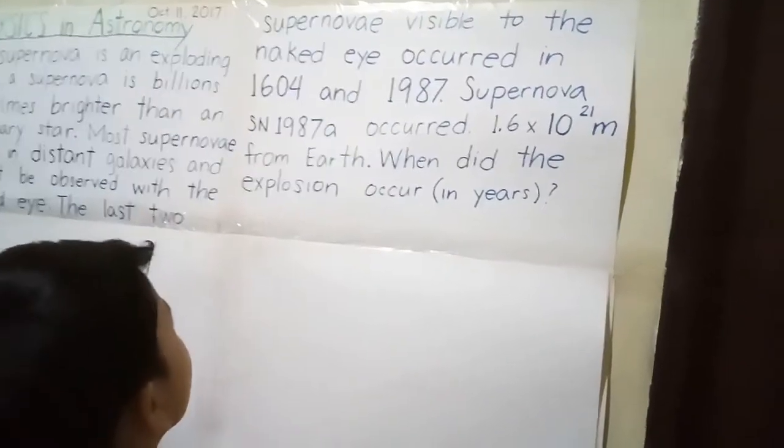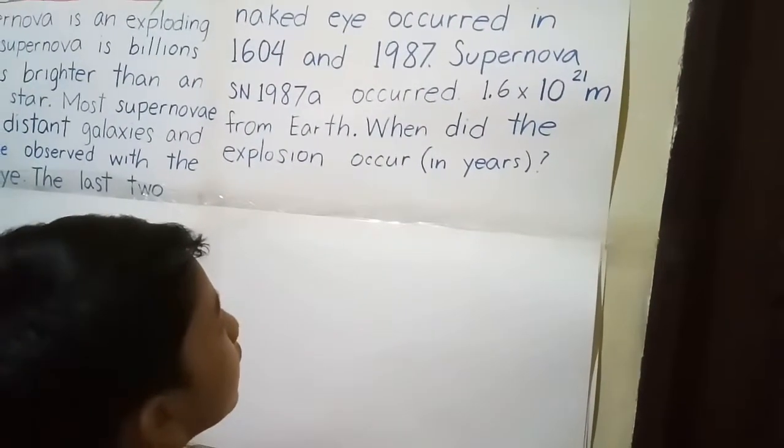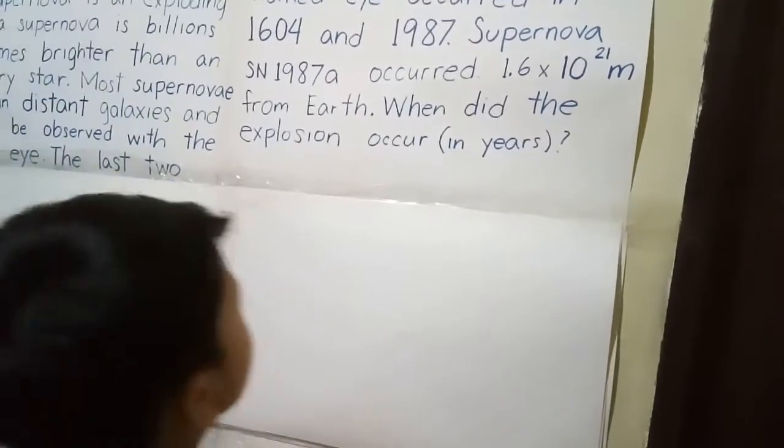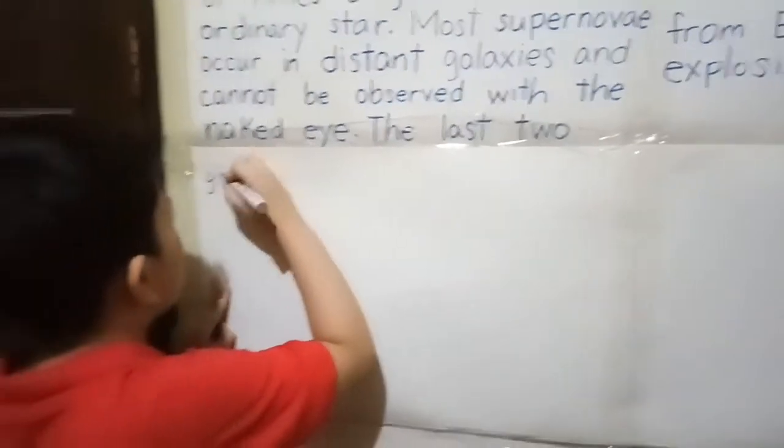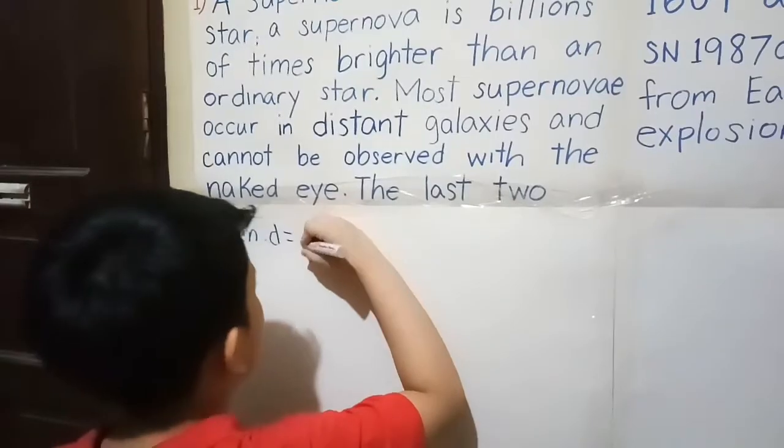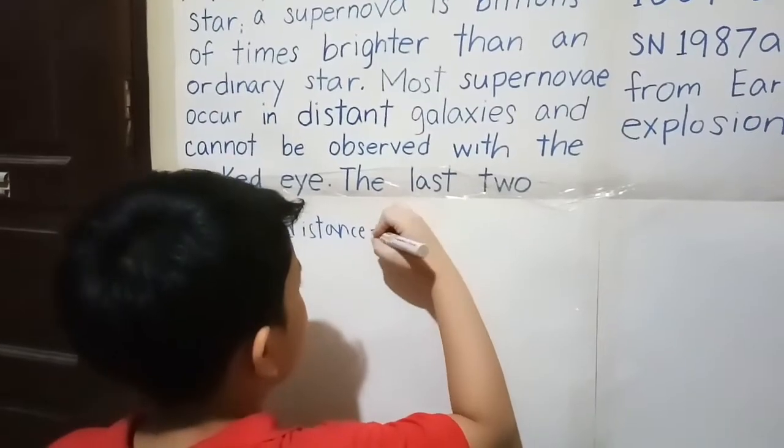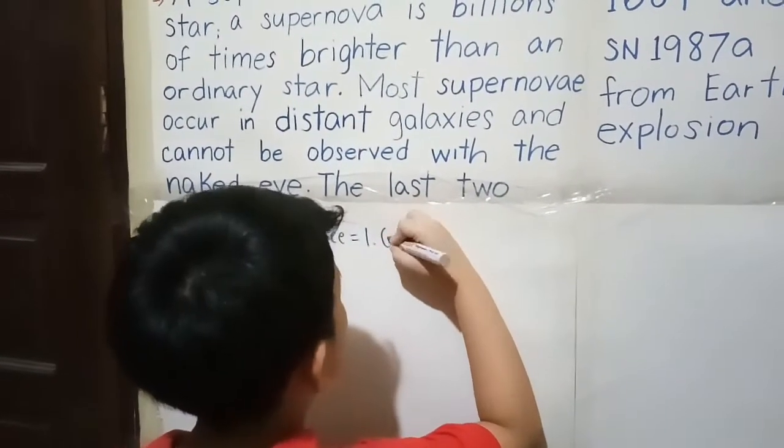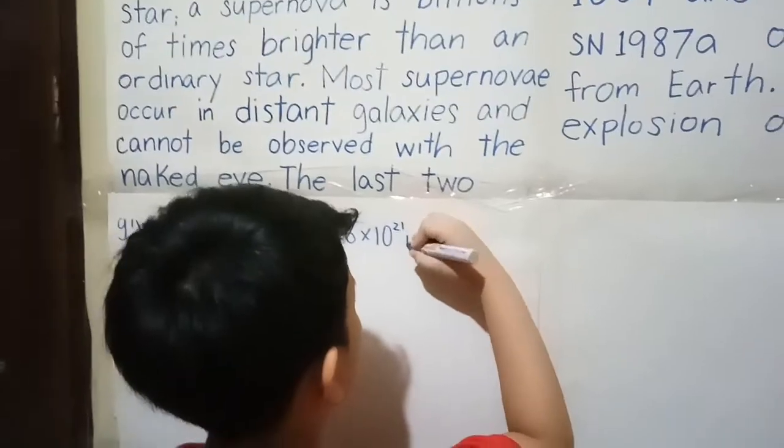Supernova SN 1987A occurred 1.6 times 10 to the 21 meters from Earth. When did the explosion occur in years? First, we should write the given, which is distance equal to 1.6 times 10 to the 21 meters.